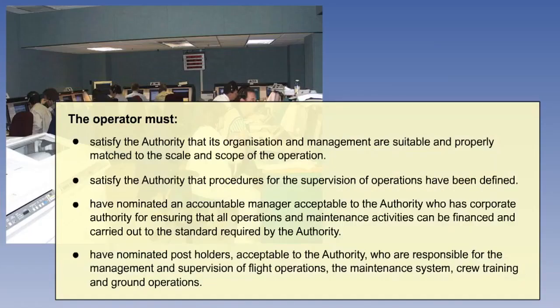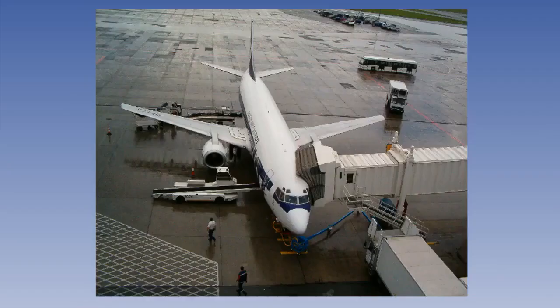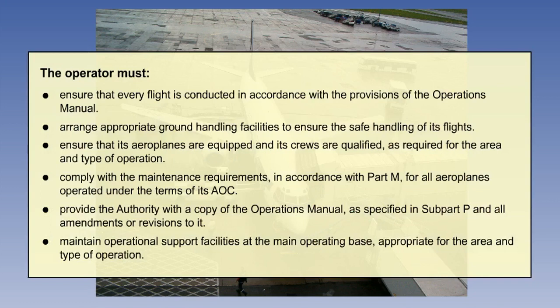Here are the operator's responsibilities with respect to organisation, management and supervision. The authority ultimately means EASA, but includes the National Aviation Authority and the state of the operator — for example, the LBA of Germany or the UK's Civil Aviation Authority (CAA). The documentary basis for the operation is the operations manual; study of this document will be extensive and the subject of a future lesson. Here is a further list of operator responsibilities with respect to Air Operator Certification.